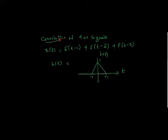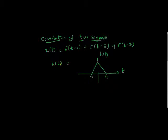As you can see, we have x of t which is a sum of various delta functions time shifted by 1, 2, and 3. That is, x of t is equal to del of t minus 1 plus del of t minus 2 plus del of t minus 3. And what we have been given is h of t, the impulse response of a system.